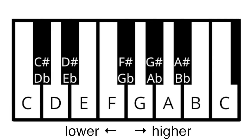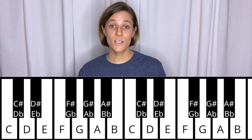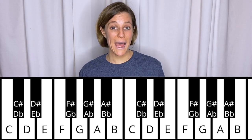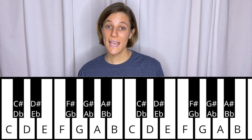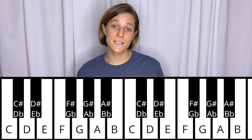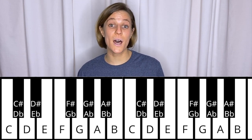Here's an image of a piano keyboard which shows you all the note names in one octave. You'll notice that some notes have two names. The note that's one half step above C can be called C sharp or D flat — it's called D flat because it's one half step below D, and C sharp because it's one half step above C.